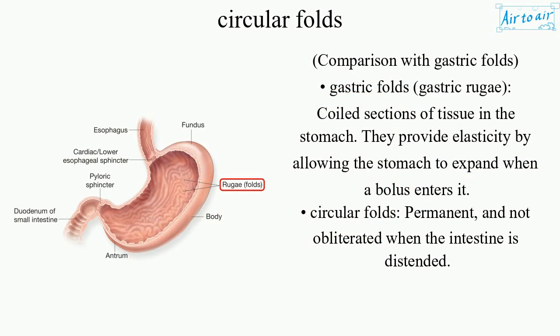Comparison with gastric folds: Gastric folds, or gastric rugae, are coiled sections of tissue in the stomach. They provide elasticity by allowing the stomach to expand when a bolus enters it. Circular folds, by contrast, are permanent and are not obliterated when the intestine is distended.